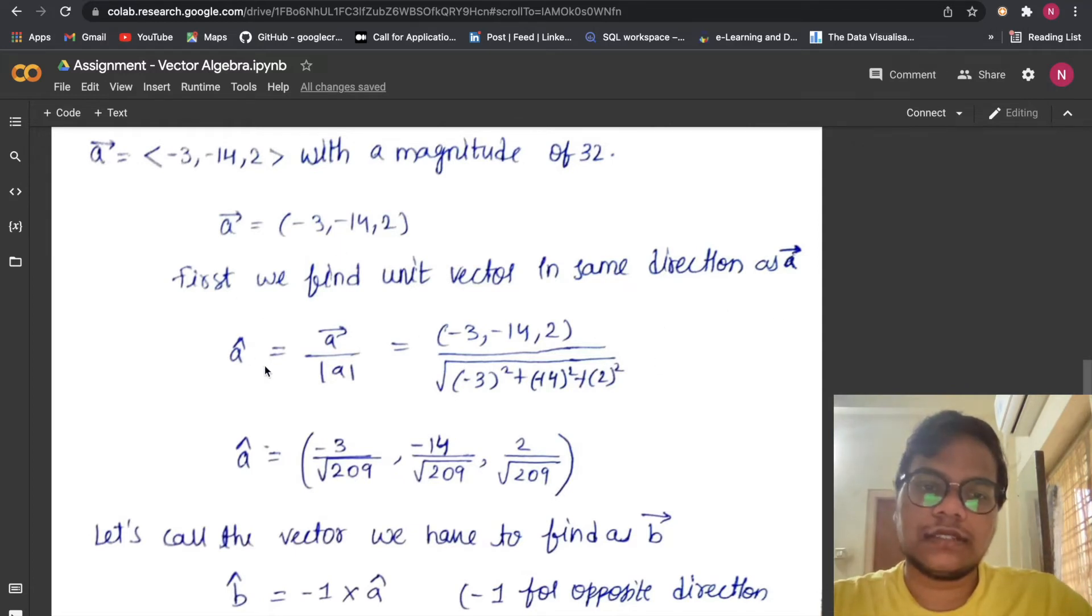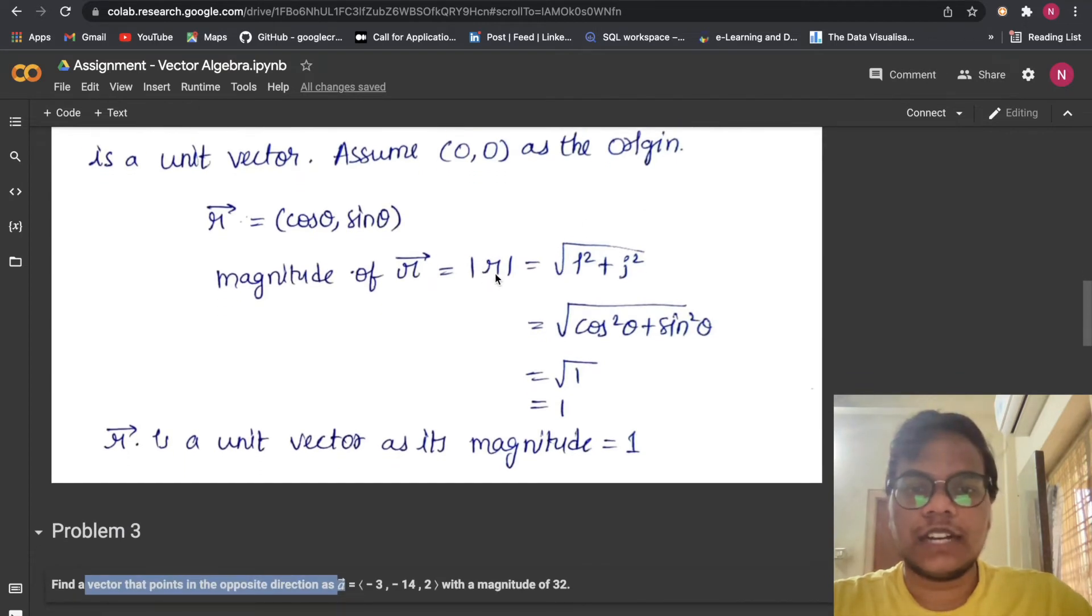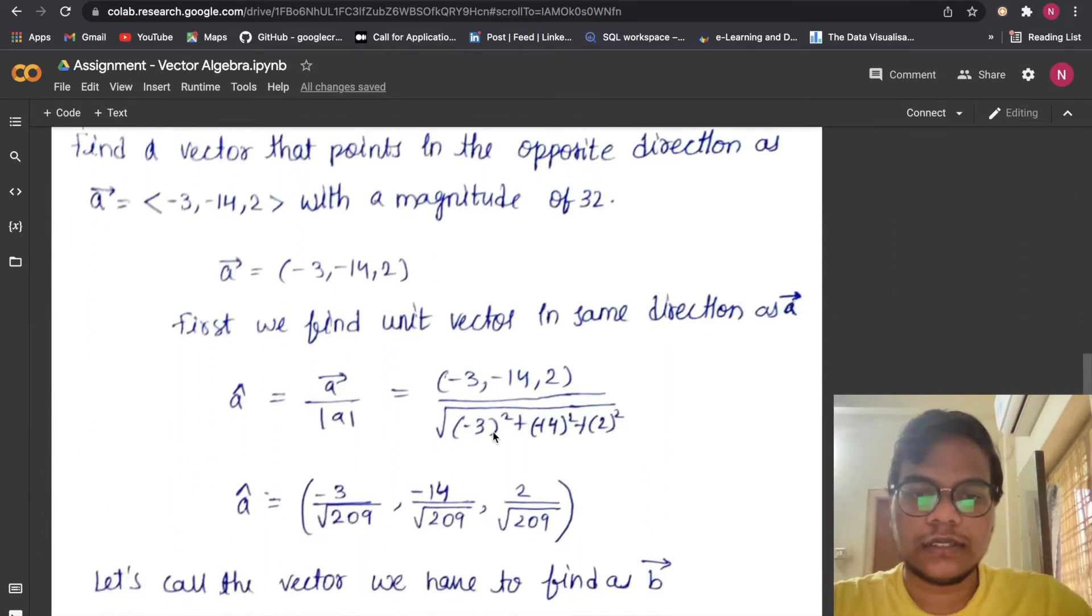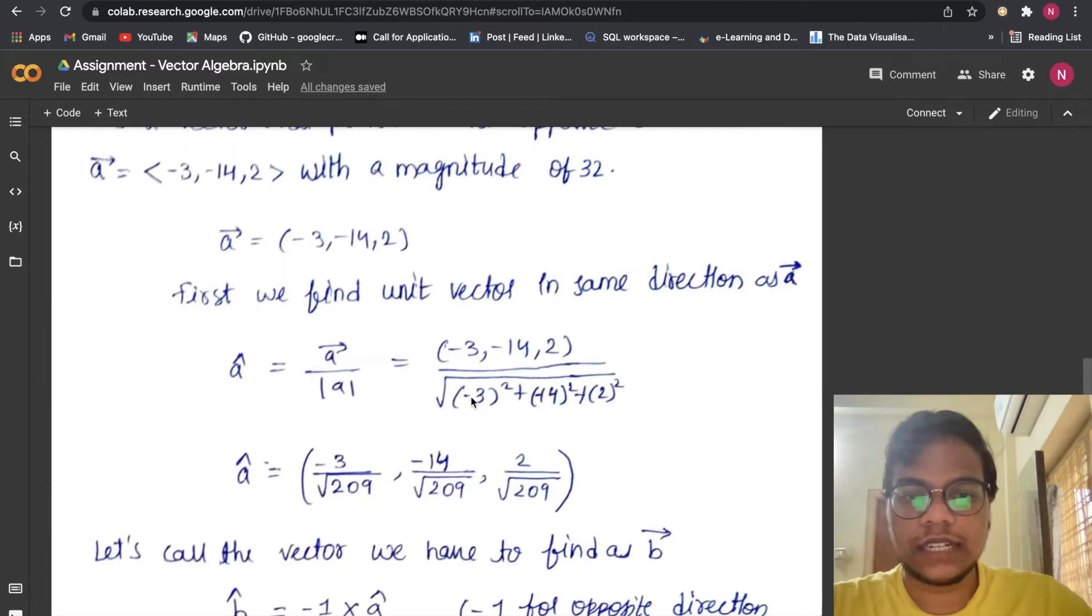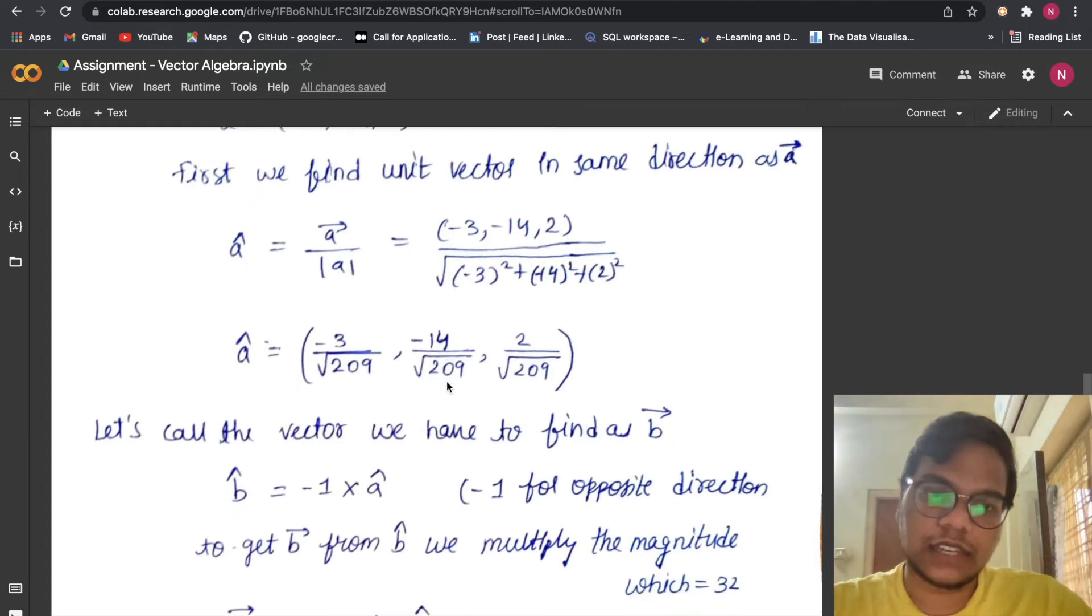To find the unit vector, this is the formula: ā / |a|, as we've seen in the previous problem. Here also same thing, so we do √((-3)² + (-14)² + 2²). So if I solve this, I got -3/√209, -14/√209, 2/√209.